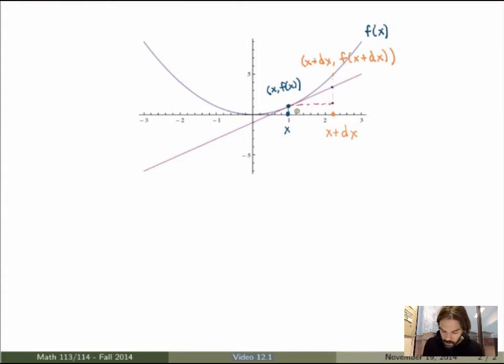Now what I could do is the following. Suppose I take a different point, x plus dx, recall that here dx is just seen as a number. So I take a different point x plus dx, and I have a point on the curve, x plus dx, and the value of the function at this point.